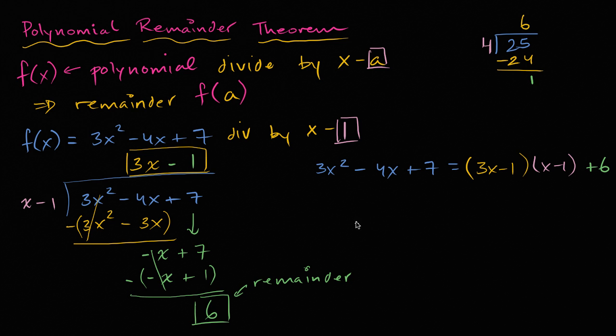And then you would get a remainder. You would get a remainder 1. Or another way of saying this, is you could say that 25 is equal to 6 times 4, 6 times 4 plus 1. Plus 1.